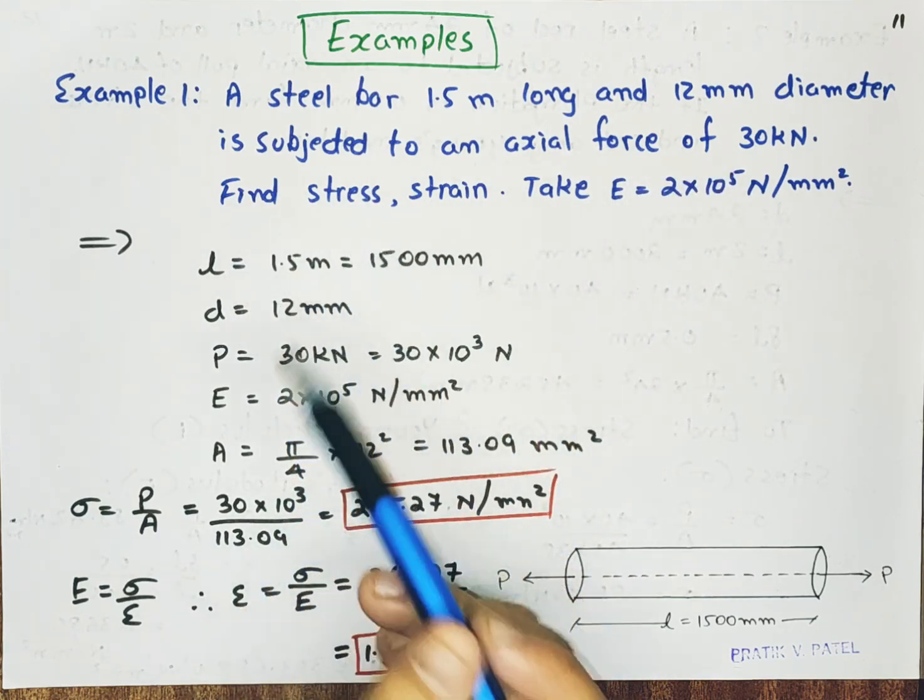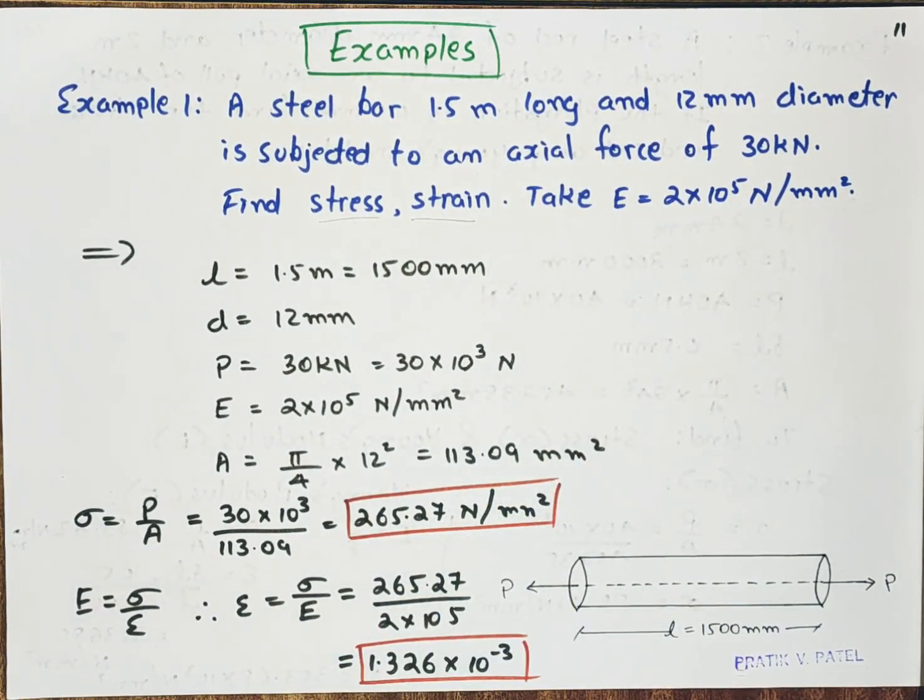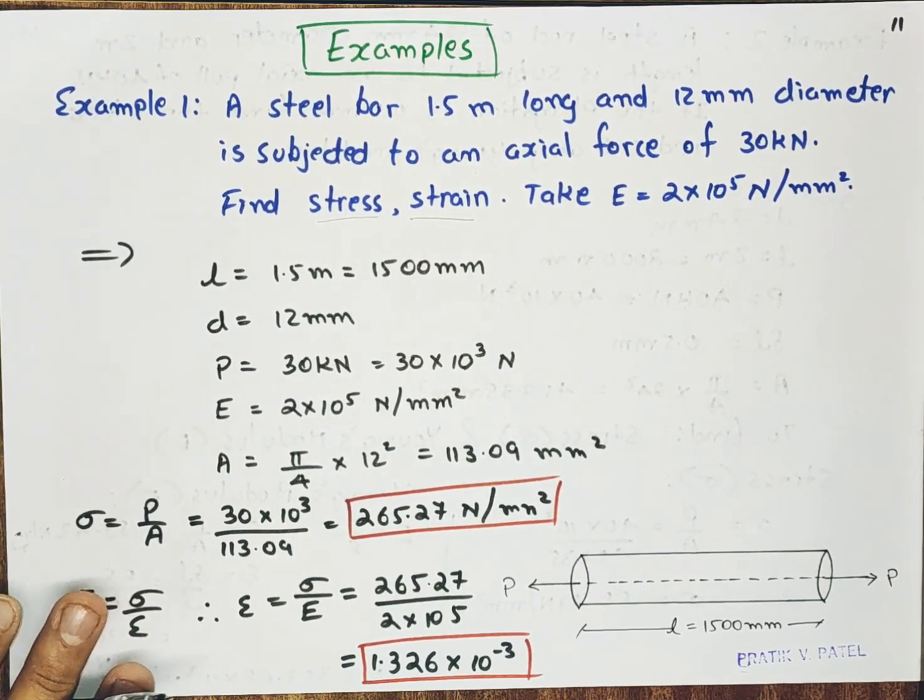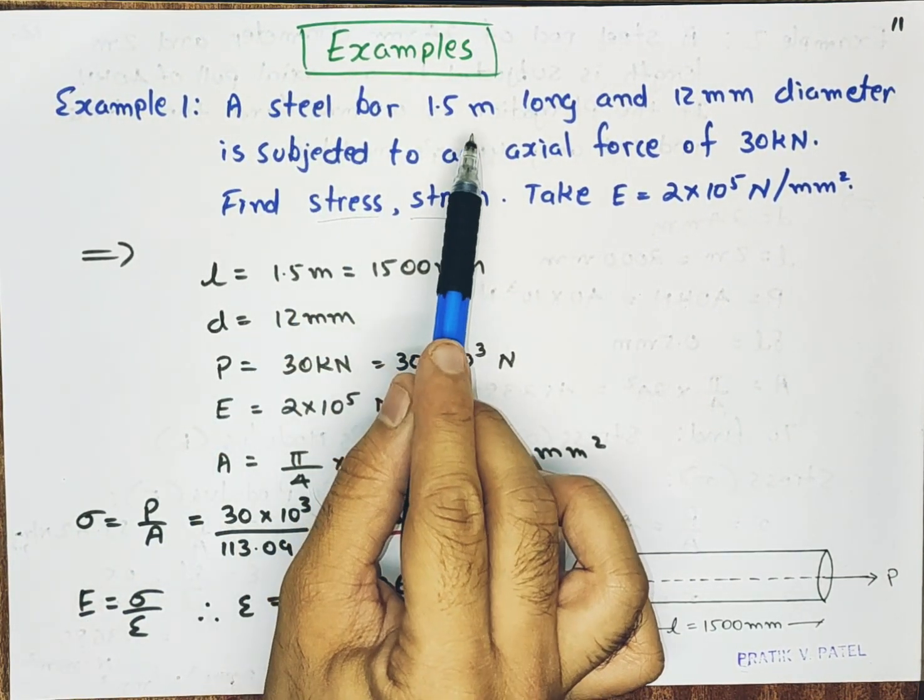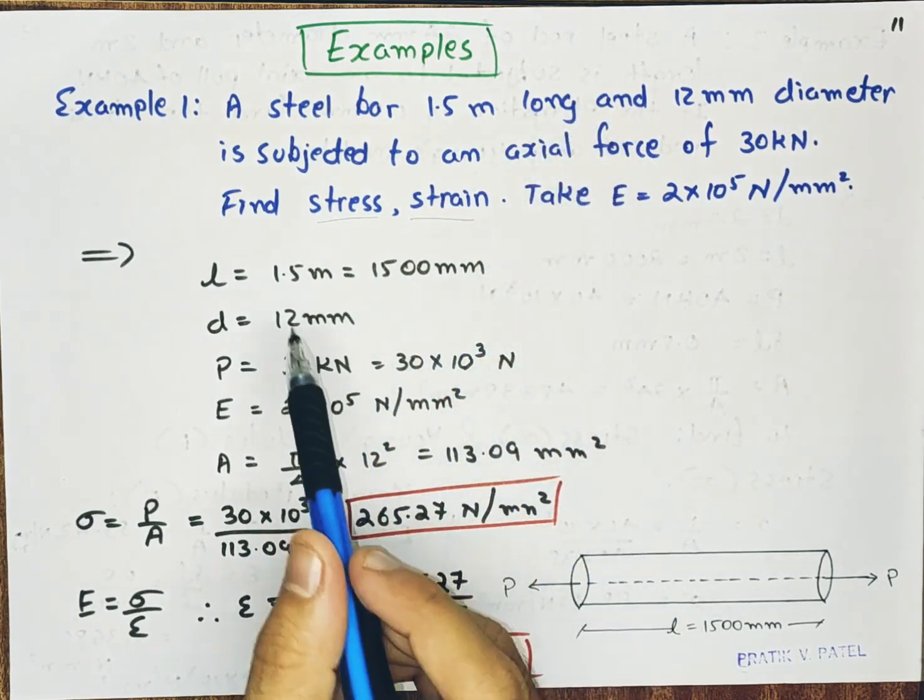Find stress and strain. Take E is equal to 2 into 10 raised to 5 newton per mm square. That is modulus of elasticity. The steel bar length is 1.5 meter. So let us write down the data.